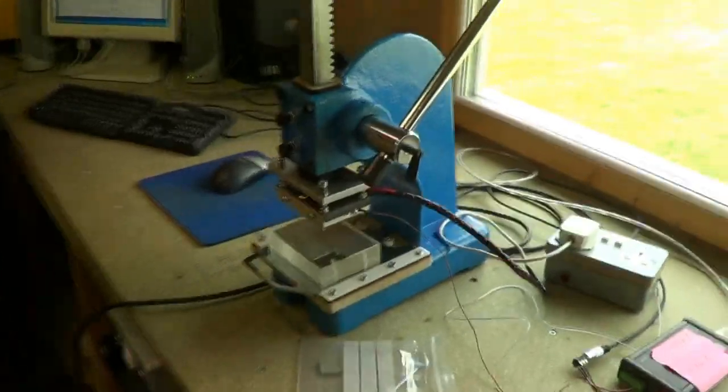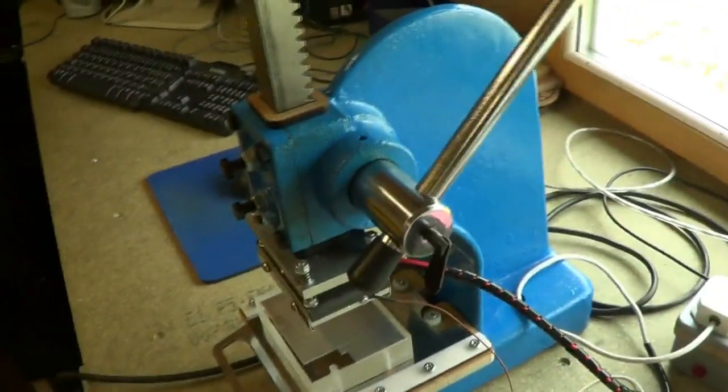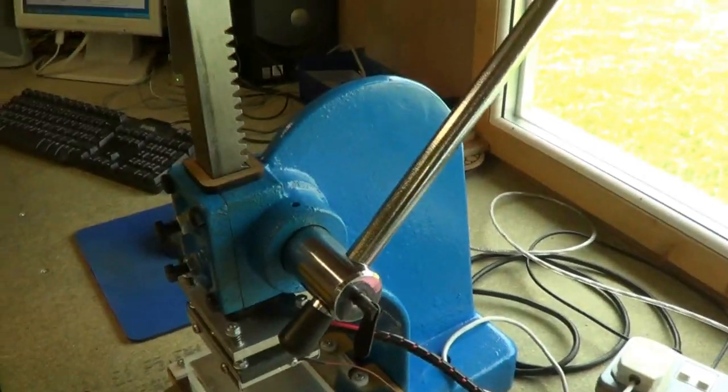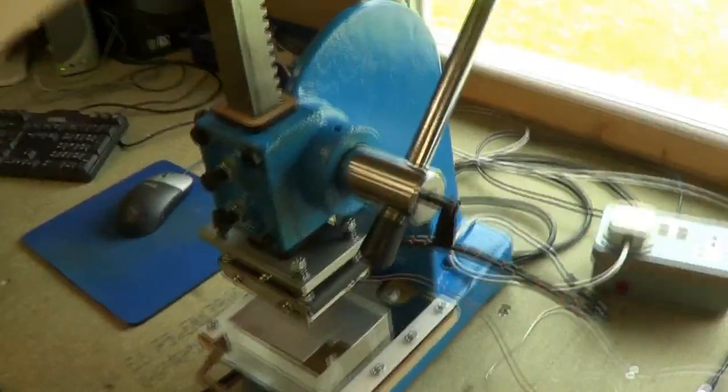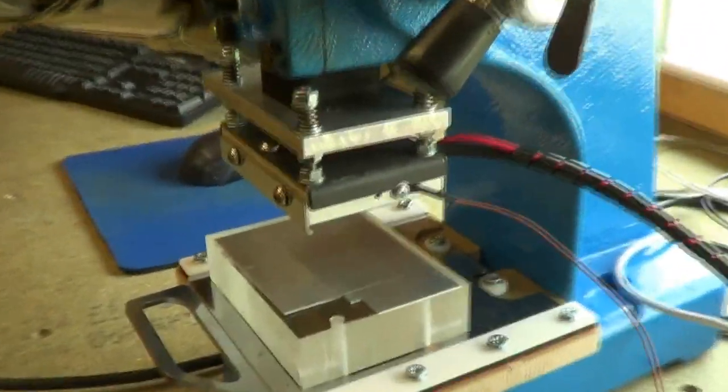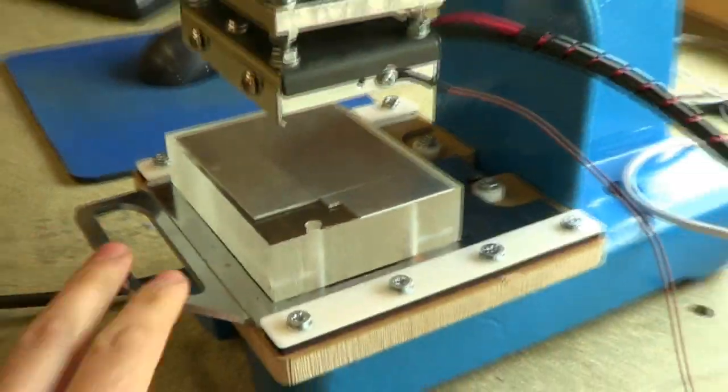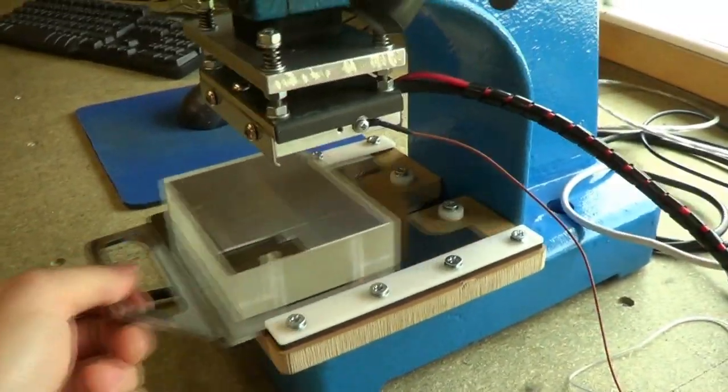Fortunately, however, I've got this little blue arbor press. I got it a couple of months ago for doing some crimping work. And I've modified it to accept the heated platen from the cheap machine and the little slide-out table as well.